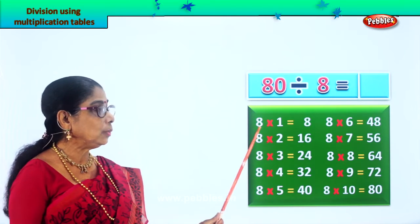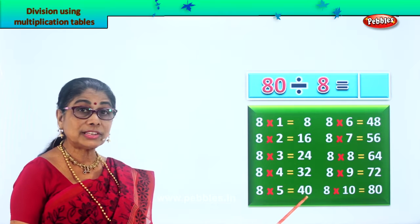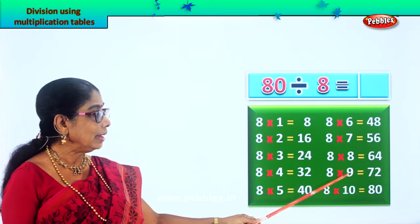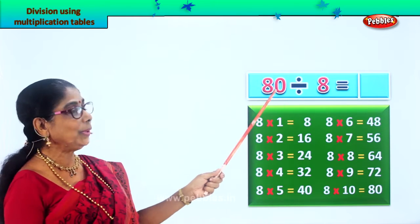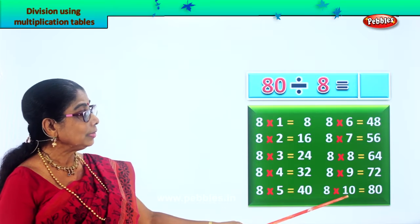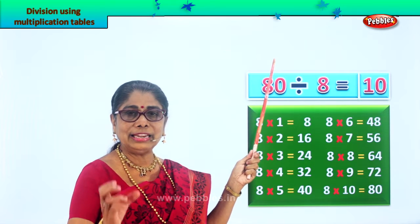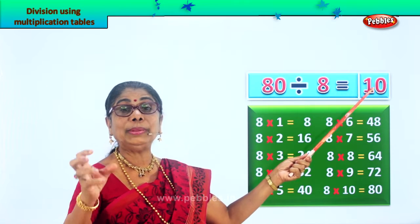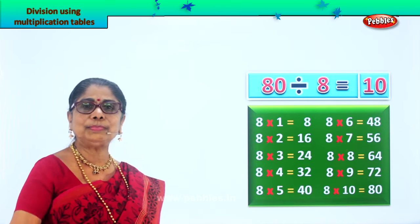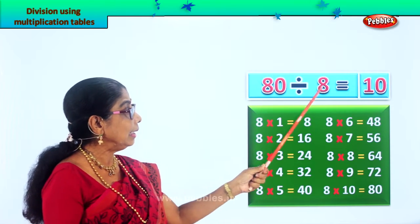8 ones are 8, 8 twos are 16, 8 threes are 24, 8 fours are 32, 8 fives are 40, 8 sixes are 48, 8 sevens are 56, 8 eights are 64, 8 nines are 72, 8 tens are 80 — and that's what we have here. 80 divided equally into 8 groups gives the answer 10. In each group there will be 10. Division is reverse multiplication: 10 eights are 80, 8 tens are 80.